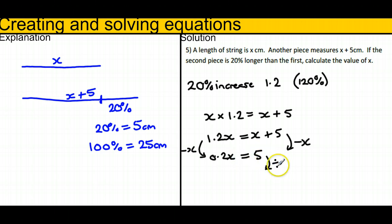And it will end up with 0.2x equals 5. And then if I divide by 0.2, you'll see that that means 0.2 goes into 5, 25 times.